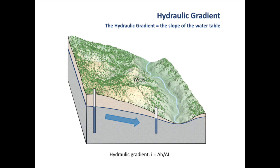It is therefore the hydraulic gradient which drives groundwater flow. If the hydraulic gradient is totally flat, i.e. zero, there would be no groundwater flow. Therefore, the hydraulic gradient is extremely important to keep the groundwater flowing.